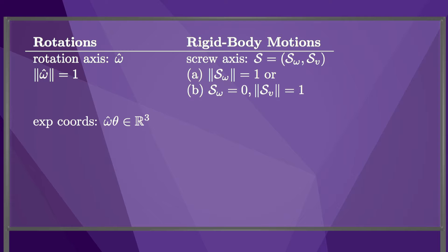For rotations, the exponential coordinates are omega hat theta, where theta is the angle of rotation about the axis omega hat. For rigid body motions, the exponential coordinates are s theta. If the screw axis has any angular component, theta is the angle rotated about the screw axis. If the screw axis has zero rotation, then theta is the linear distance traveled along the axis.